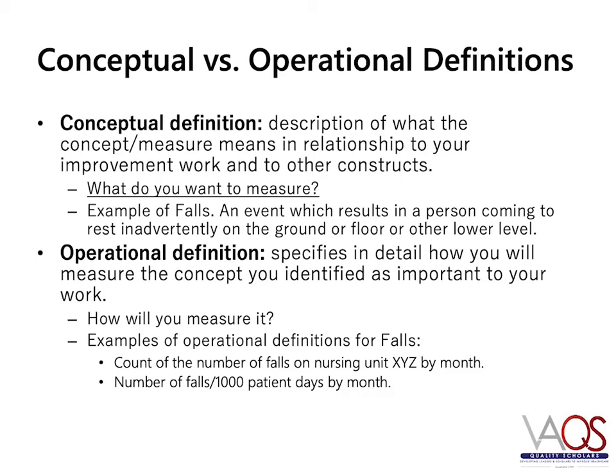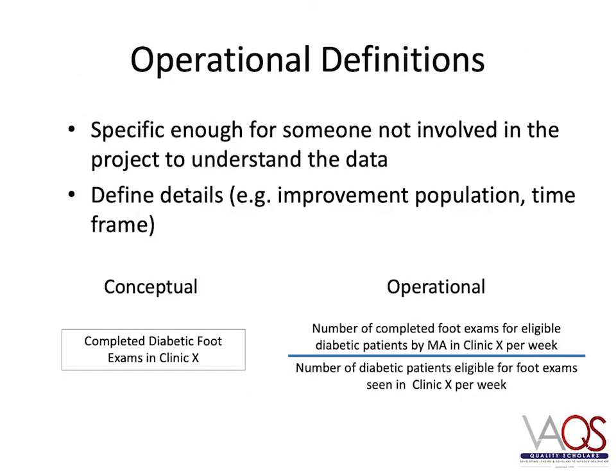So what's the difference between a conceptual definition and an operational definition? Abstractness versus specificity. A conceptual definition is the description of what the concept means in relationship to your improvement work or to other constructs — what is the concept you want to measure? An operational definition specifies in detail how you will measure the concept you identified as important to your work. It is specific enough for someone not involved in the project to understand the data and to replicate how you're collecting the data.